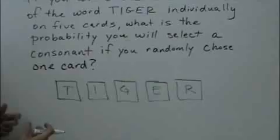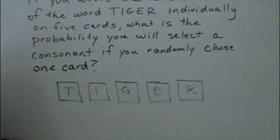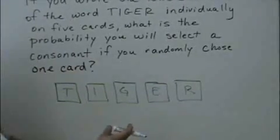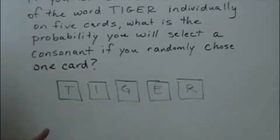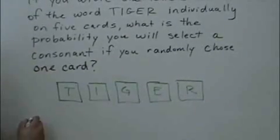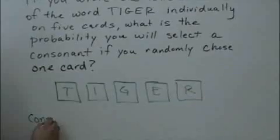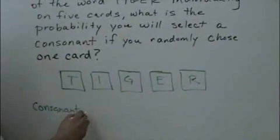This question is saying, what is the probability that if I randomly select one of these five cards, that I select a consonant? Now, you have to know in your English class what a consonant is. A consonant is a letter that is not a vowel.